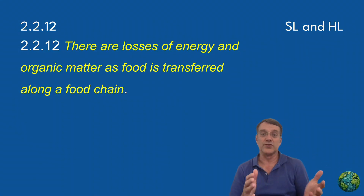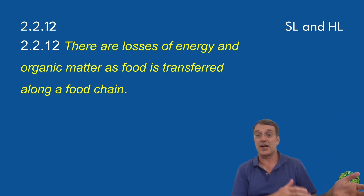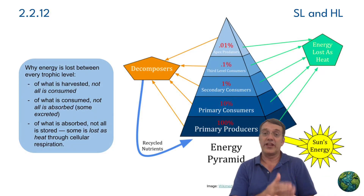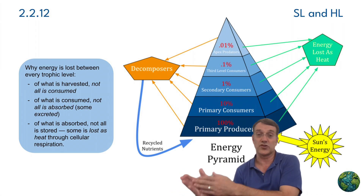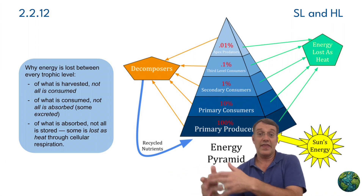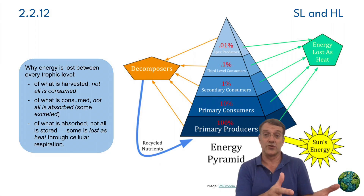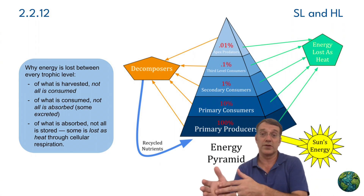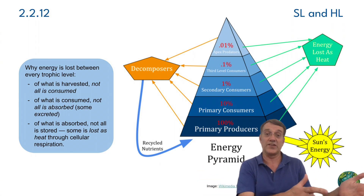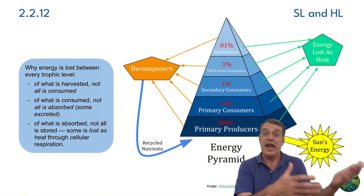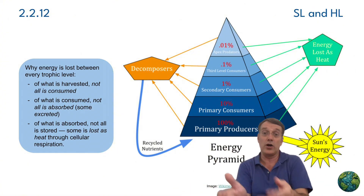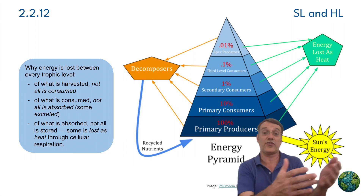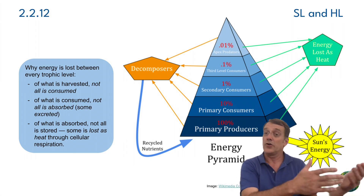As energy moves through trophic levels, there are significant losses at each step. Not all available food is consumed by organisms at the next level — there's always some left over. Then, of the food that is consumed, not all of it is absorbed. Some passes through as waste like excrement and urine. And of all of the stuff that's absorbed, not all of it becomes new biomass because some of the energy is lost as heat during respiration.